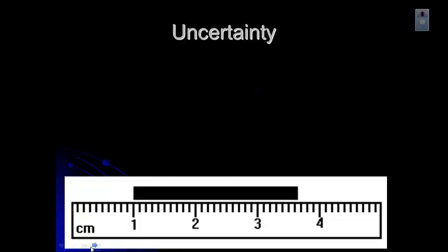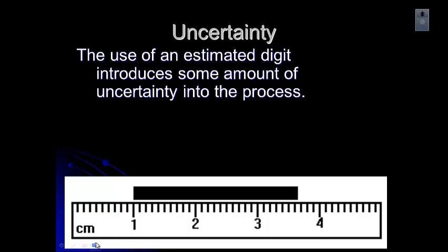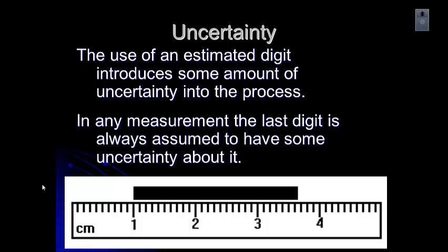And if you look at that, what happens is we just know that using that estimated digit introduces some uncertainty into that process. So we always assume that that last digit has some uncertainty in it. So that's just something to be aware of as you're making measurements. And we'll be doing some practicing in class with that.